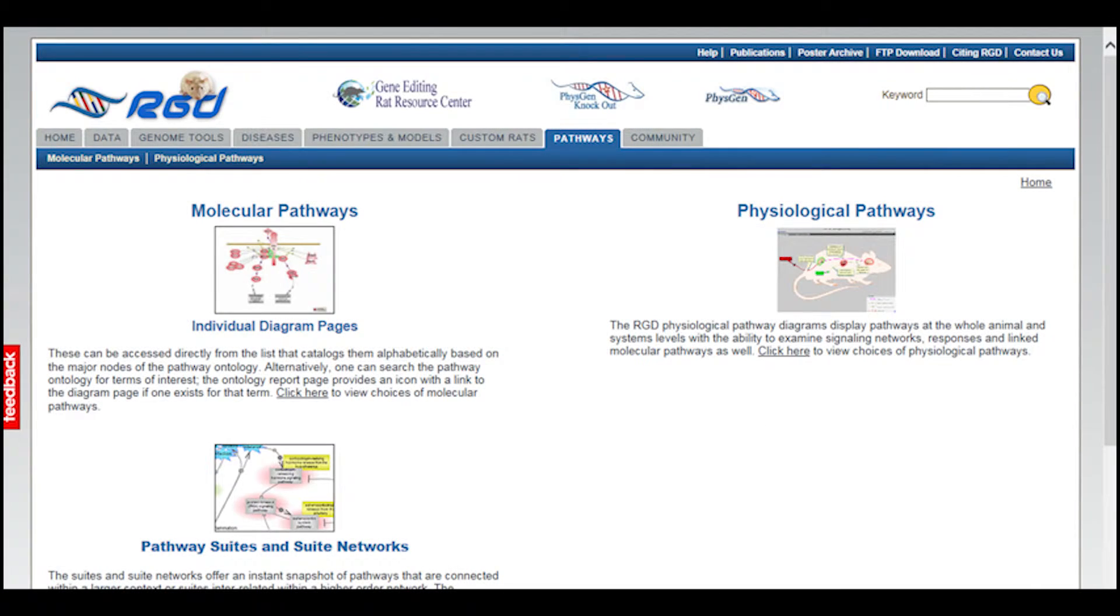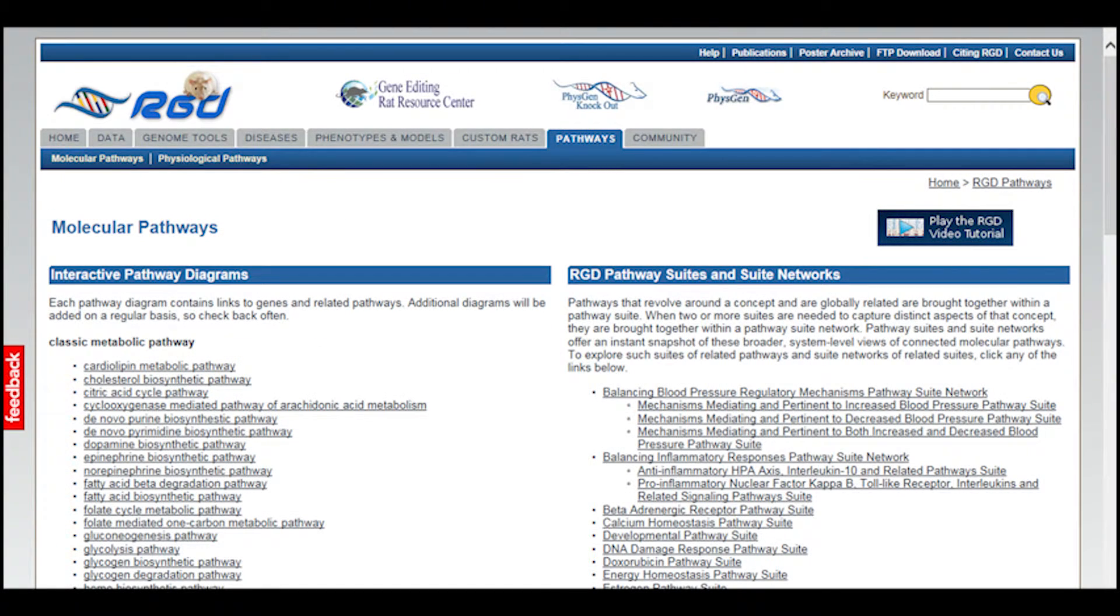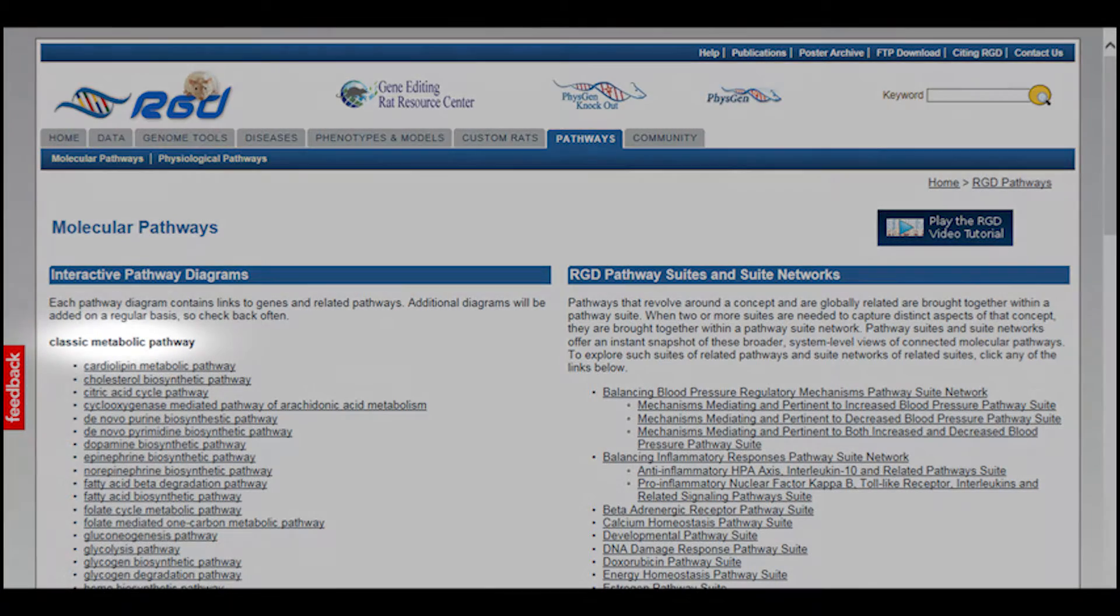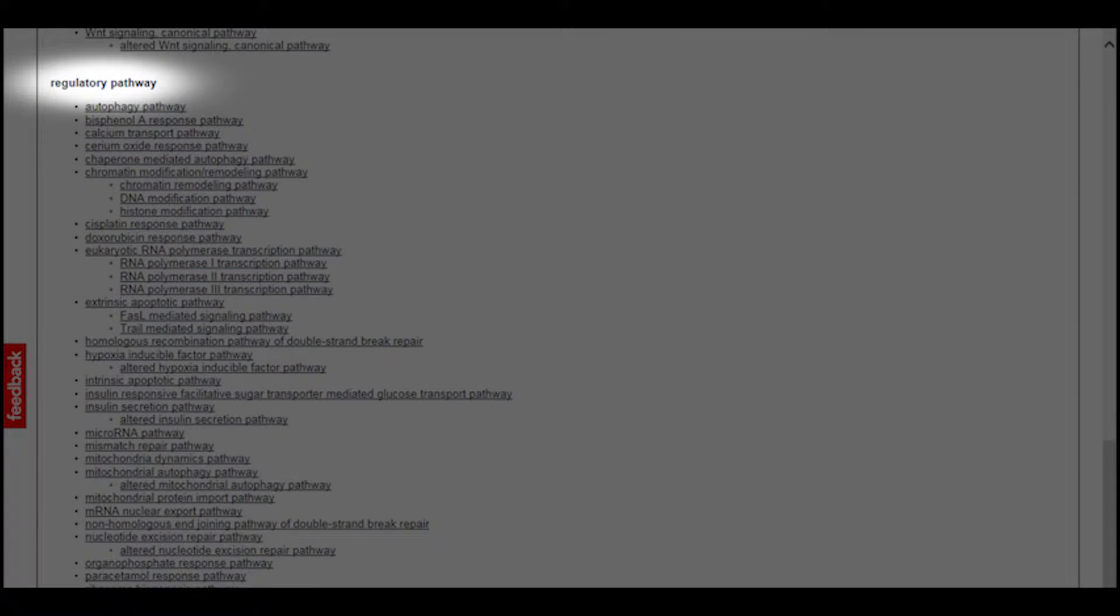On the resulting page, click on molecular pathways individual diagram pages to see the comprehensive list of available diagrams. Notice that the list is divided into five categories: classic metabolic pathway, signaling pathway, regulatory pathway, disease pathway, and drug pathway.